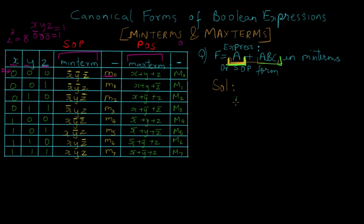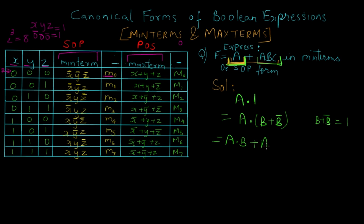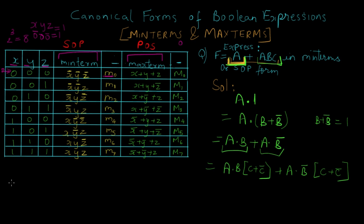In order to do that, we associate it with boolean laws. This term abc is complete, so we don't need to do any processing on it. But I write the first part separately and multiply it, or take a logical AND operation, with 1. In the next step I write a AND (b OR b complement). We know b OR b complement is equal to 1 — this is due to the complement law which we studied in our previous tutorials on laws of boolean algebra. This gives us the value (a AND b) OR (a AND b complement).